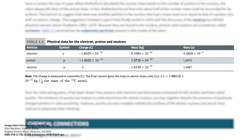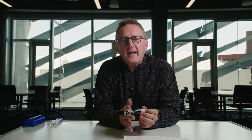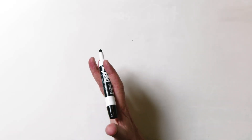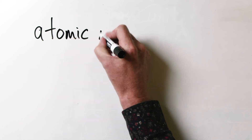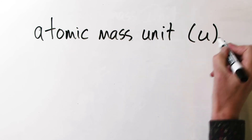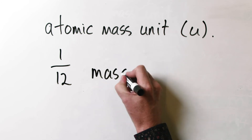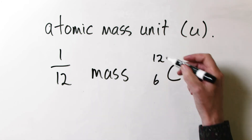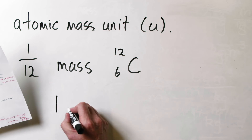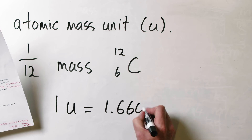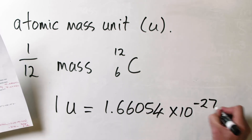Every neutron weighs the same. Every proton weighs the same. Every electron weighs the same. So every atom is going to have its own particular mass — an extraordinarily important concept in chemistry. Scientists, once they knew the constituents of the atom, defined a thing called the atomic mass unit, with symbol U, equal to exactly one twelfth of the mass of an atom of carbon-12. That works out to 1.66054 times 10 to the minus 27 kilograms — a tiny, tiny value.